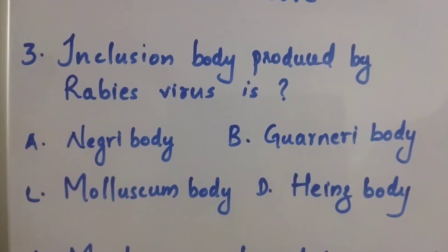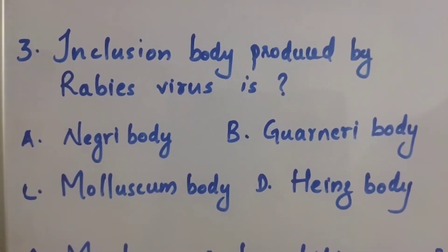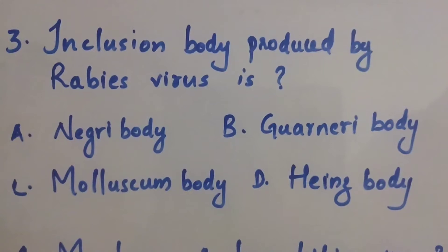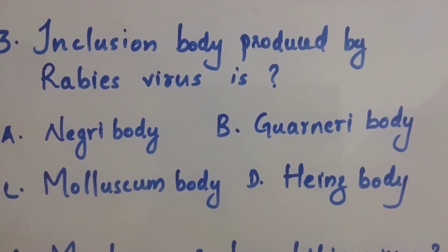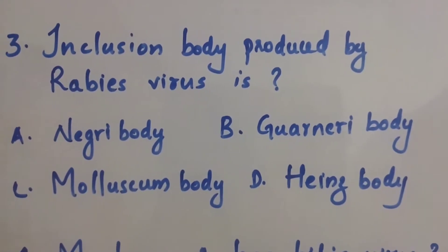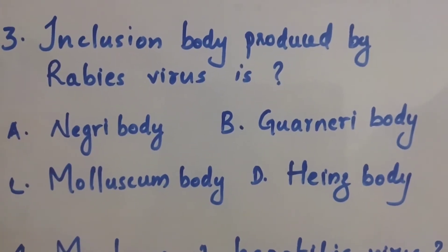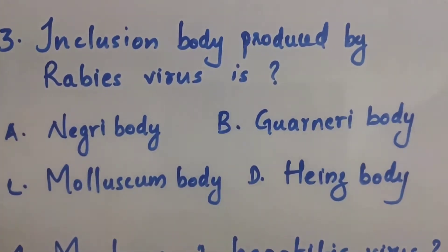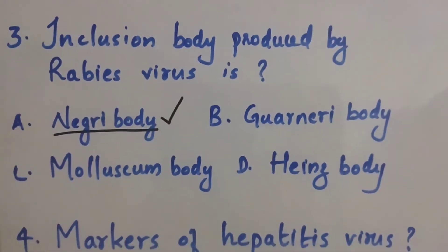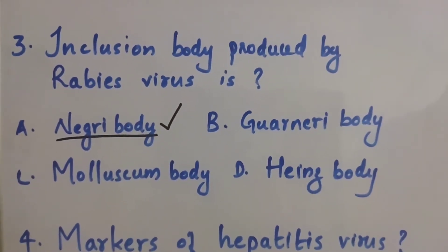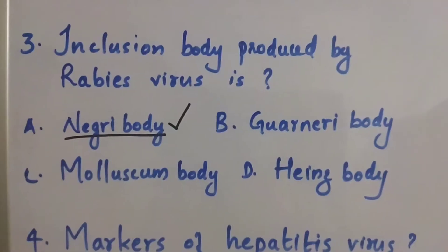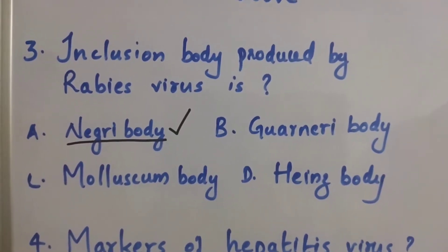Question number 3: Inclusion body produced by Rabies virus is — Option A: Negri body. Option B: Guarneri body. Option C: Molluscum body. Option D: Heinz body. The right answer is Option A, Negri body. The inclusion body produced by Rabies virus is Negri body.